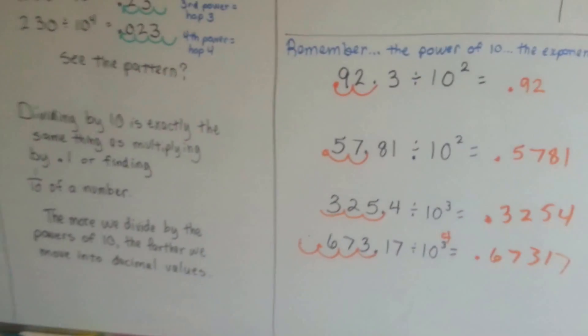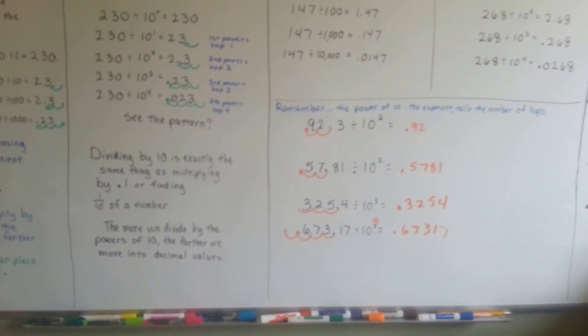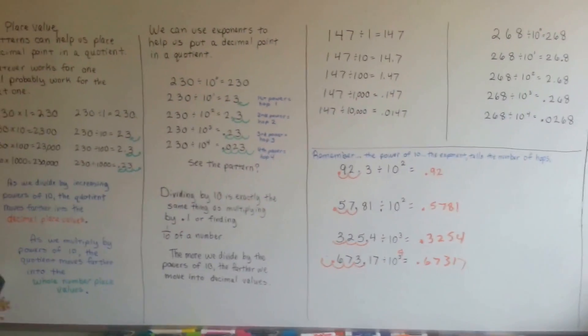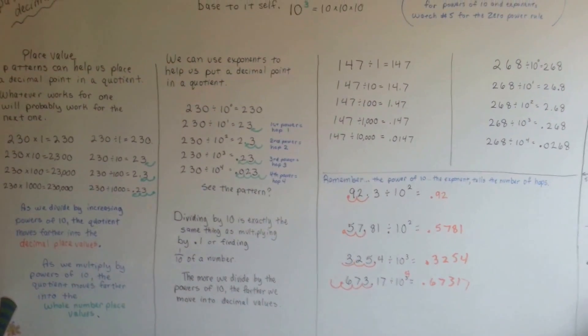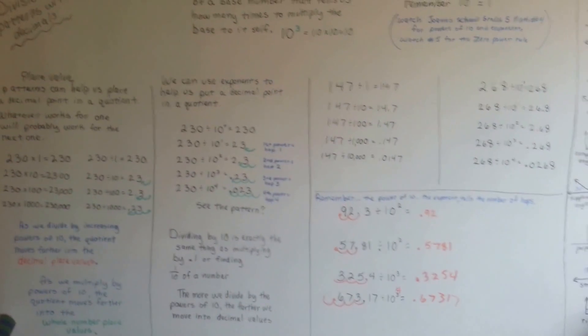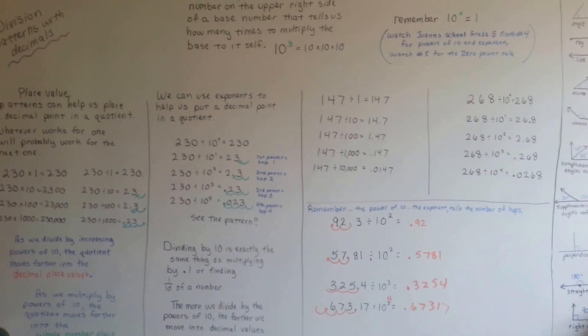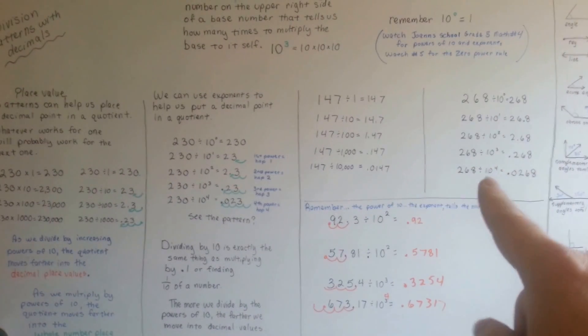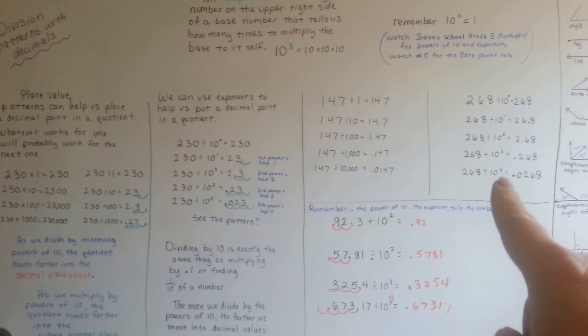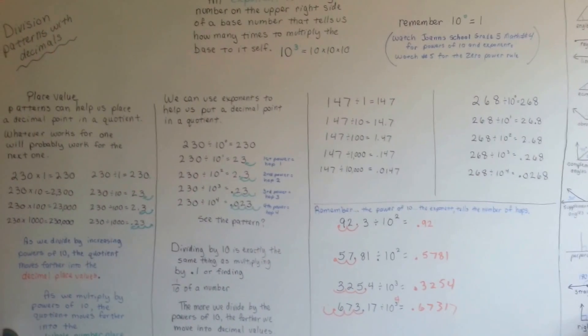So, we can use patterns when we're dividing decimals that will help us to put the decimal point into the quotient. And just remember what the exponents mean, so that when you do them in your homework, you can remember. Whatever the exponent is, the power of 10 tells you how many hops to make.